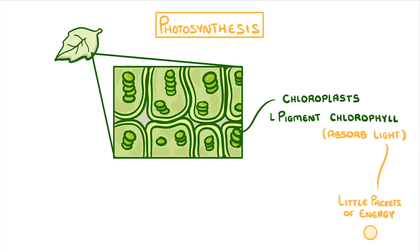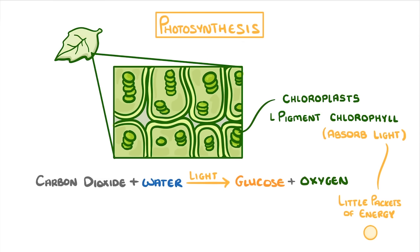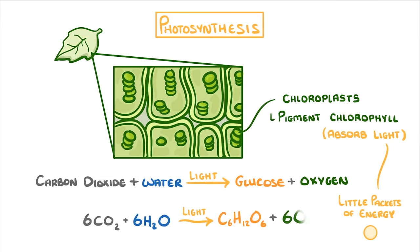Chlorophyll uses this energy to convert carbon dioxide and water into glucose and oxygen. We can also write this as a chemical equation: six CO2 molecules combining with six H2O molecules to make a single molecule of glucose, also giving out six O2 molecules. Light is written on top of the reaction arrow because the reaction requires light energy to take place.